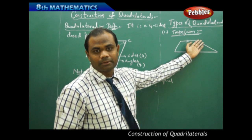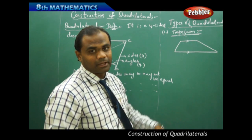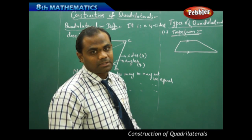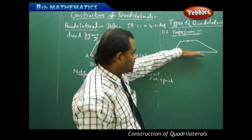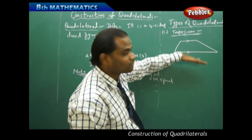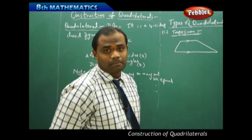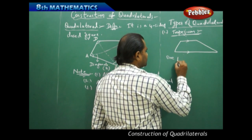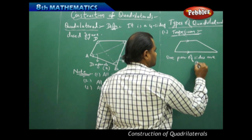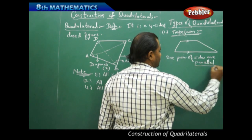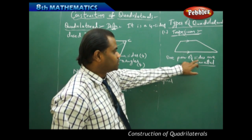The first type of quadrilateral is called a trapezium. A quadrilateral is called a trapezium if one pair of sides is parallel. There must be one pair of sides in the entire quadrilateral which must be parallel. So the condition for a trapezium is that one pair of sides must be parallel.